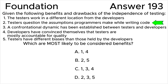Statement 2: Testers question the assumptions programmers make while writing code. Testers and developers have varied backgrounds, technical viewpoints, and potential biases, allowing testers to usefully challenge assumptions made by stakeholders during system specification and implementation. Thus, this is an advantage.